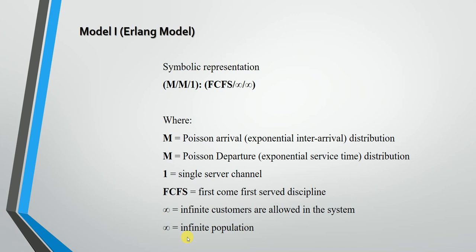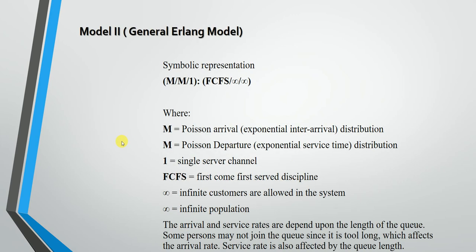The second model is also called the General Erlang model. Model 2 has the same symbolic representation as Model 1: M/M/1:FCFS/∞/∞, and the meaning of all symbols is the same. However, what is the difference between Model 1 and Model 2?